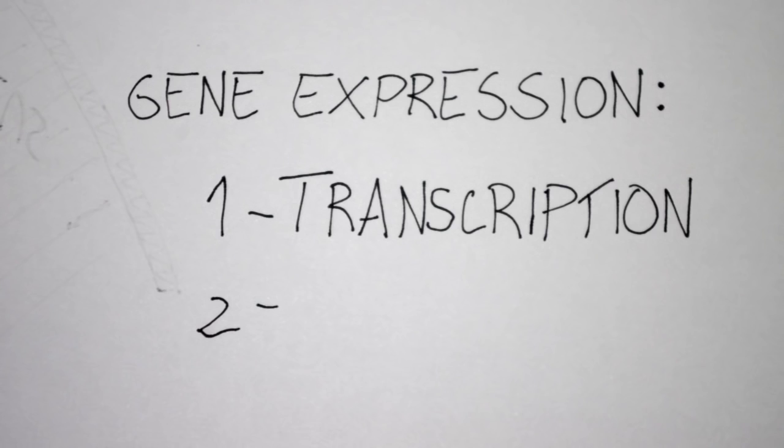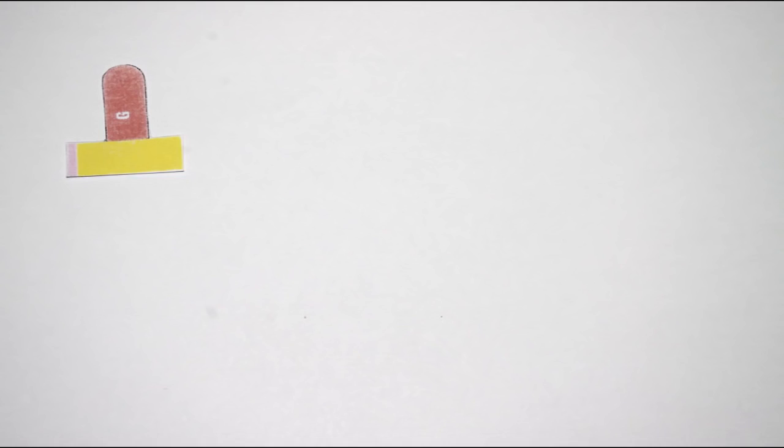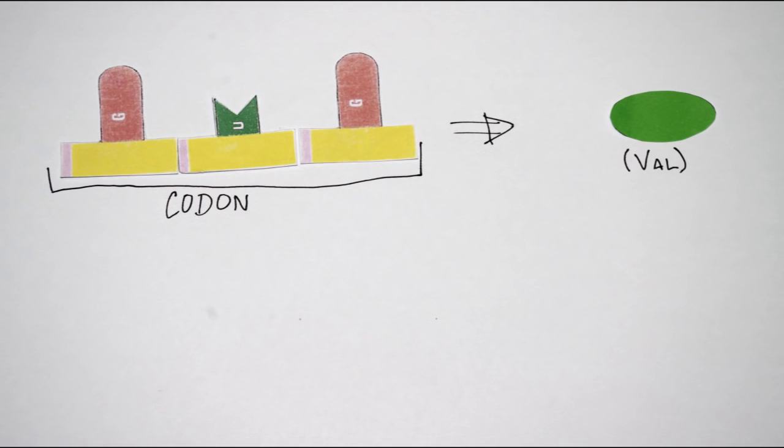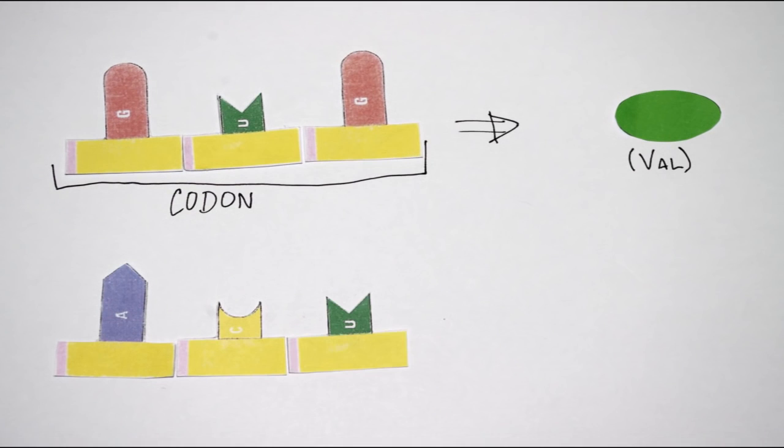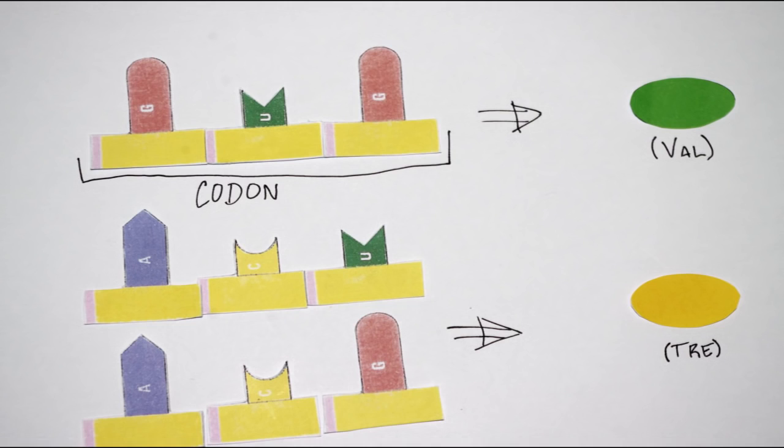The second phase is the translation, in the ribosomes. When the information carried by the mRNA is used to create the proteins. This information is stored in groups of three nucleotides, the codons, and each of these corresponds to a specific amino acid. That's really like a code, the genetic code.